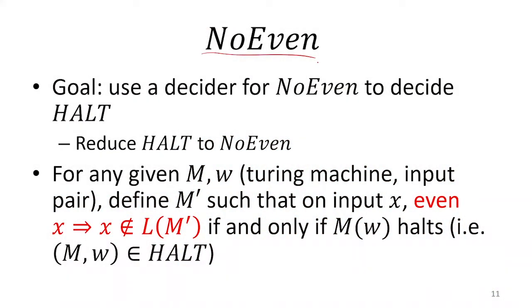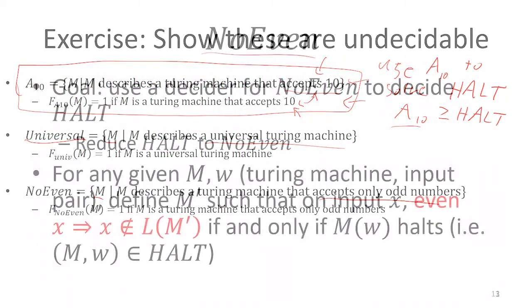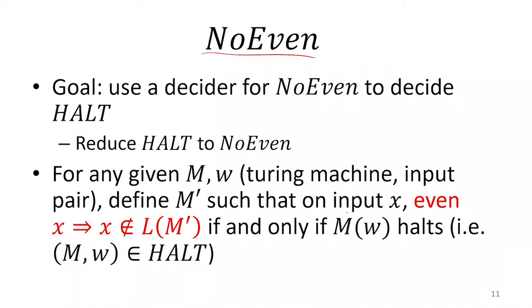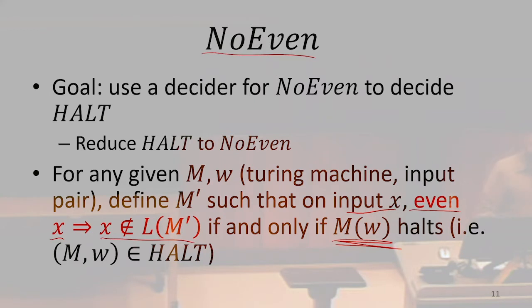Our goal here is to show that the 'no even' language is undecidable, where 'no even' consists of all descriptions of Turing machines that only accept odd numbers — that is, they don't accept any even numbers. We want to build a new machine M' such that if M' receives input x, whenever x is even, x is not in the language of M', and we only want that to be the case if M halted on w.